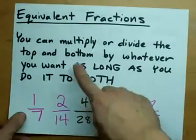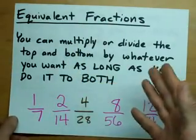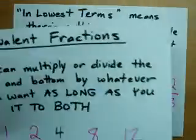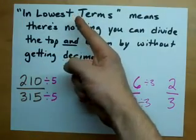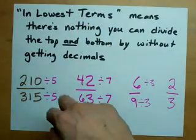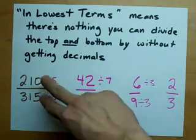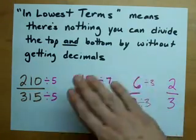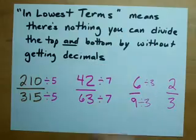Equivalent fractions are made by multiplying the top and bottom of your fraction by whatever you want, as long as you do it to both. And if you're looking to put a fraction in lowest terms, you're looking to divide the top and bottom as much as you can without going into decimals. Hey, best of luck!